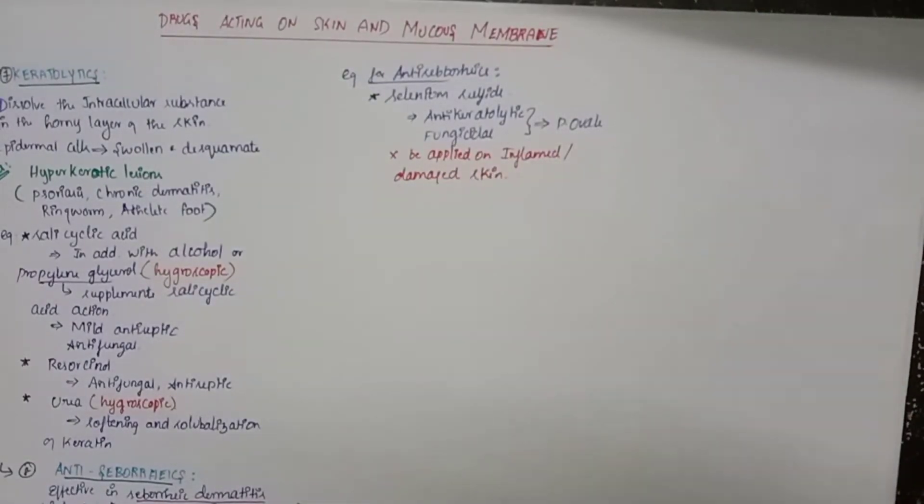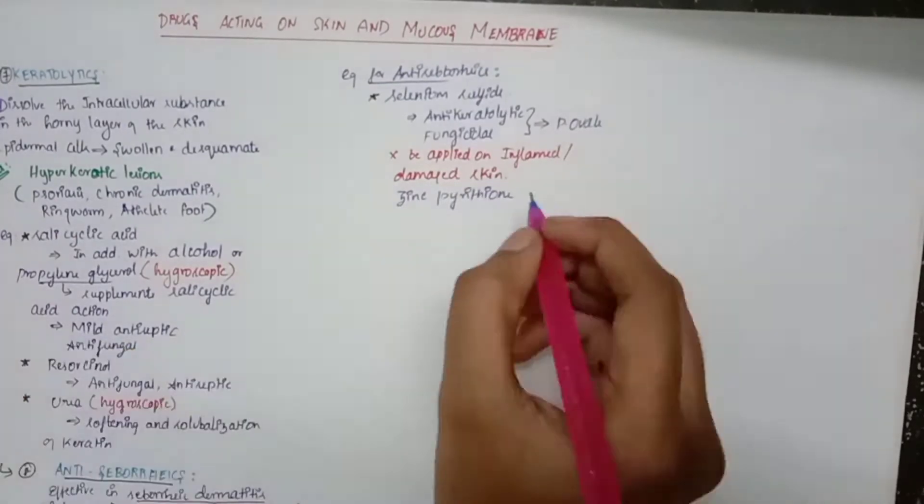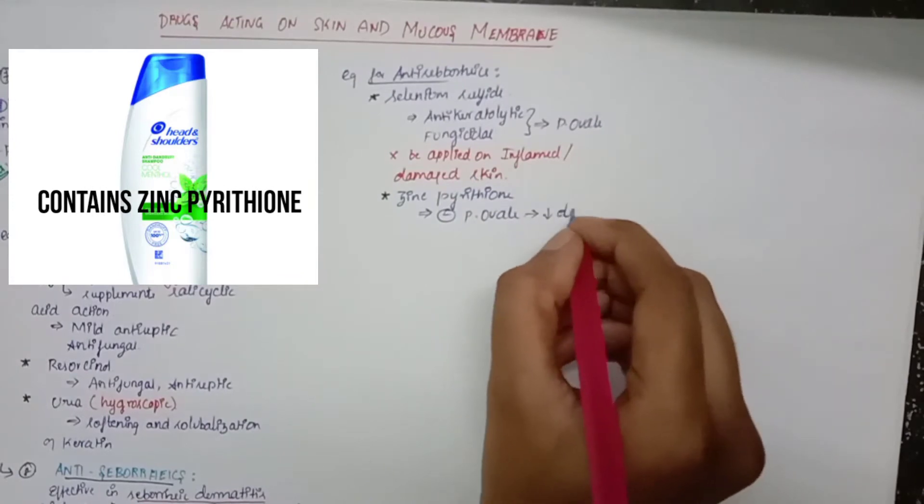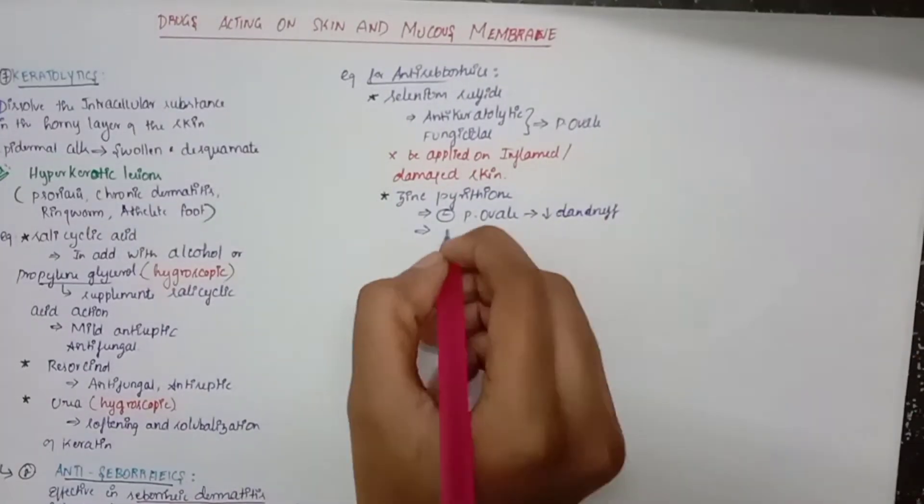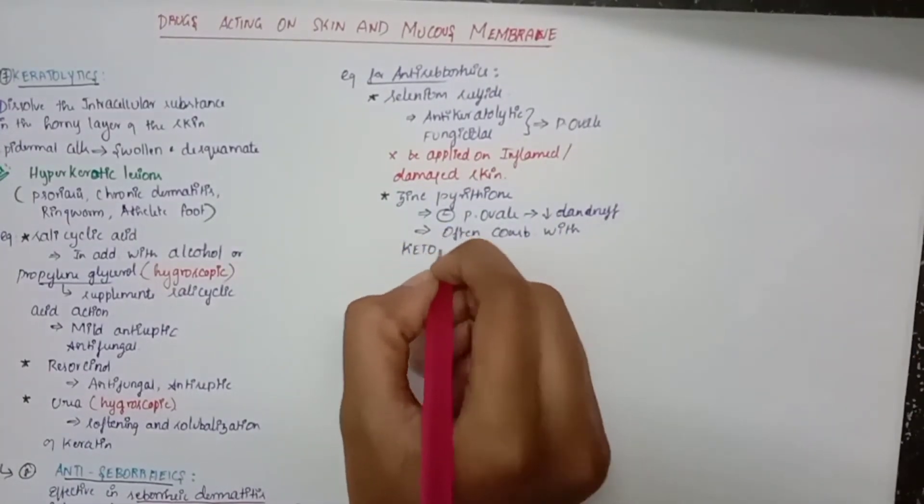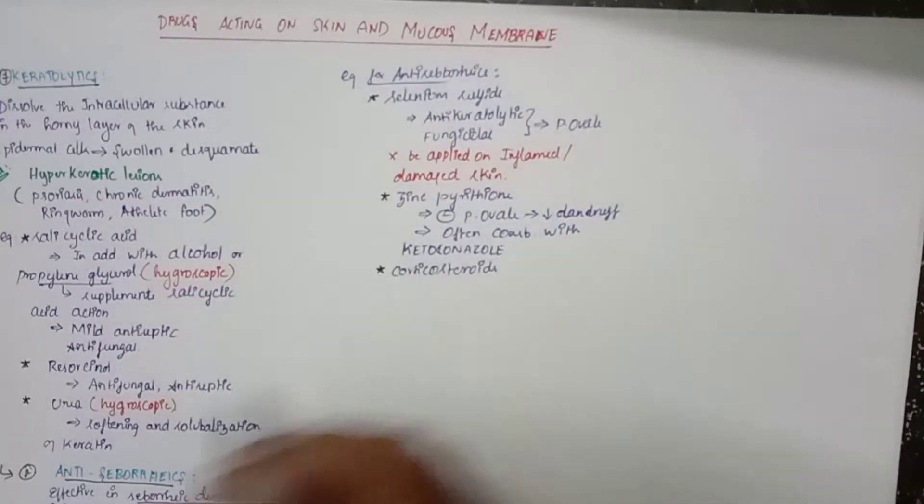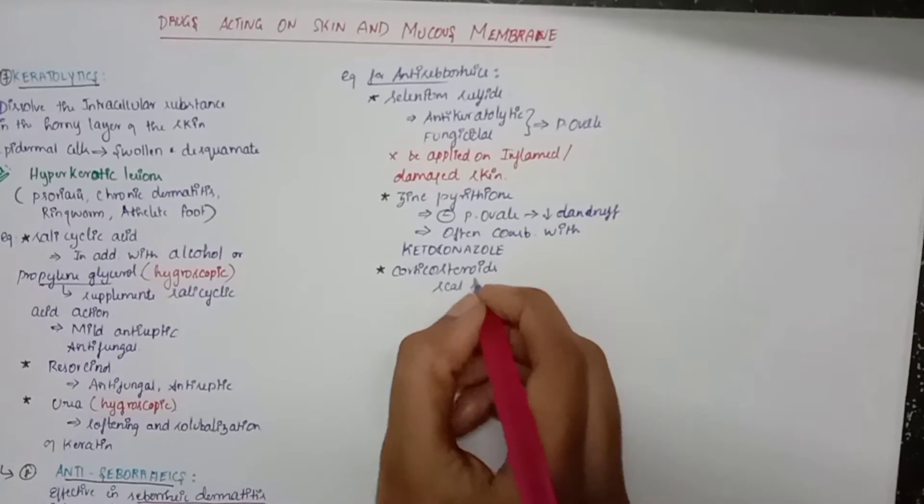The next drug is zinc pyrethone. Zinc pyrethone inhibits the p-ovale, and because of that it reduces the dandruff. So it is often combined with ketoconazole.